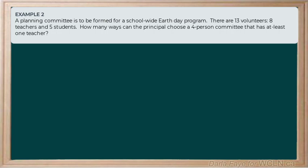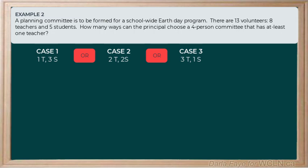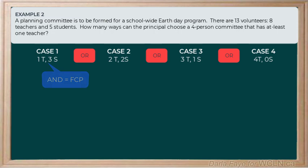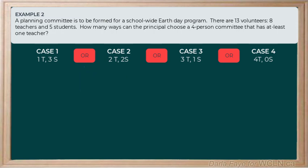There are a lot of different possibilities for these committees. Case one: one teacher and three students fill the other spots. Case two: two teachers and two students. Case three: three teachers and one student. And the last case: all four committee members are teachers and no students. In each scenario I'll need to use the fundamental counting principle, and because I've got multiple cases — case one or case two or case three — that means I'll add all of the possibilities for each case.